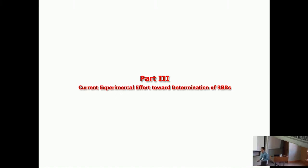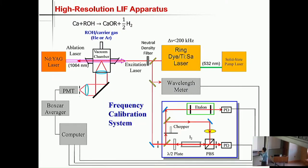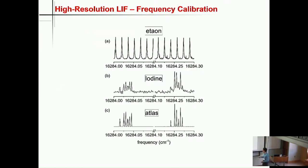Part three of this talk is about our current effort to experimentally determine rotational branching ratios. We were using pulsed lasers to do laser-induced fluorescence, dispersed fluorescence, and cavity ring-down, so our resolution is limited by the laser resolution. But we do have two ring lasers — one dye ring laser and one Ti:sapphire ring laser. We've set up both lasers and built a frequency calibration system using an etalon for relative calibration and Doppler-free saturation absorption spectroscopy of iodine for absolute calibration. I'm showing the experimentally obtained etalon fringes and iodine spectrum compared to the atlas.